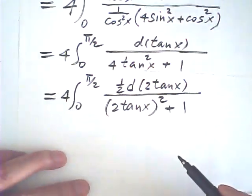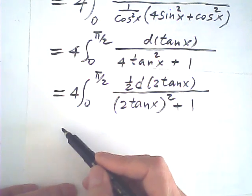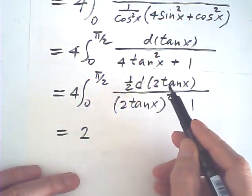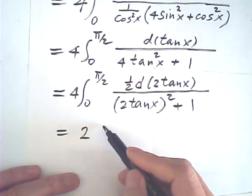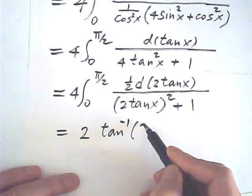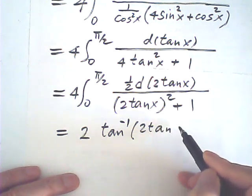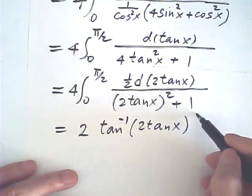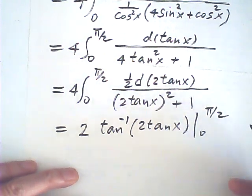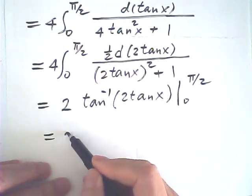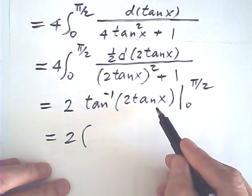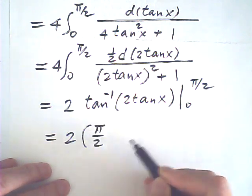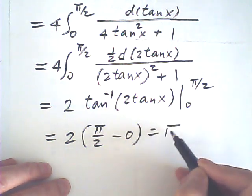Then this is equal to 2, and the integral is arctangent of 2 tangent x from 0 to half π. So this is 2 times, tangent half π is infinity, infinity arctangent is half π. 0 is 0. So the answer is π.